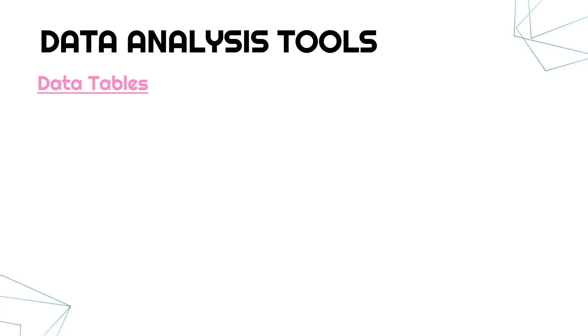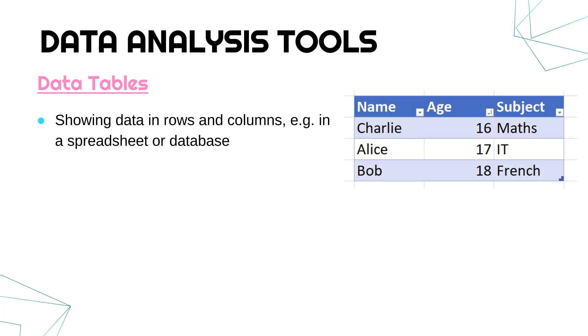The first one is data tables. A table is where you show data in rows and columns. The two main bits of software we would mostly make tables in are spreadsheets or databases.